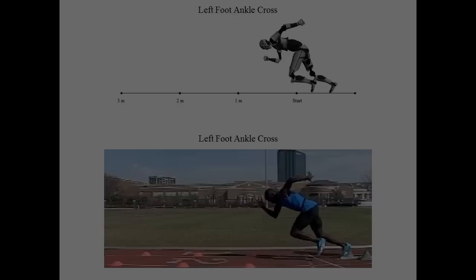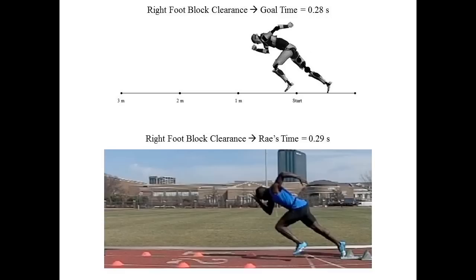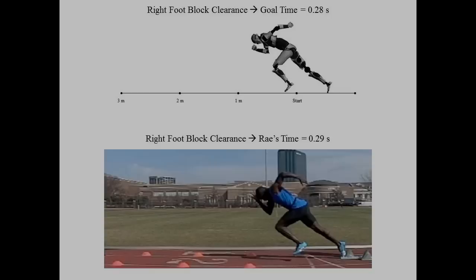Next, we will look at his right foot clearing the front block. The gold medal goal time is to clear the front block in 0.28 seconds, and Ray nearly hits this goal time. Most of his angles look pretty similar to the model, but his left knee is slightly more bent than the model, and his left foot is slightly too high off the ground. This will cause his flight time after block clearance to be longer than necessary, and this is one potential area for improvement.